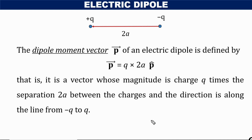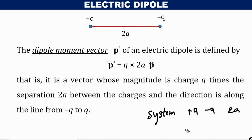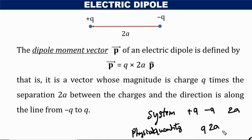Electric dipole moment and electric dipole are different. The electric dipole is the system consisting of two equal and opposite charges plus q and minus q separated by a distance 2a. The dipole moment is the physical quantity which is the product of the magnitude of a charge and the distance of separation between the two-point charges. It is a vector, and its direction is from negative to positive charge along the axis of the dipole.